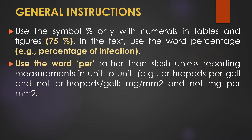Leave a space between the number and all symbols. Use the percentage symbol only with numerals in tables and figures. In the text, use the word 'percentage' — for example, write 'the percentage of infection is...' within the text. Use the word 'per' rather than a slash unless reporting measurements in unit-to-unit format — for example, write 'arthropods per gal' and not 'arthropods/gal', and 'mg per mm²' and not 'mg/mm²'.